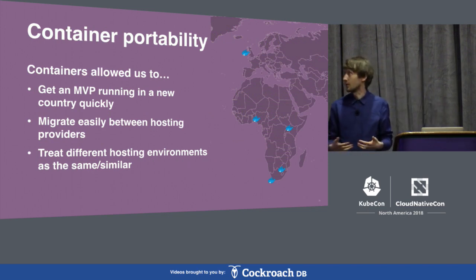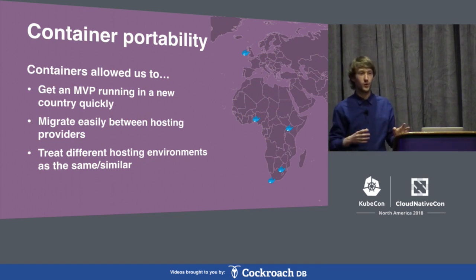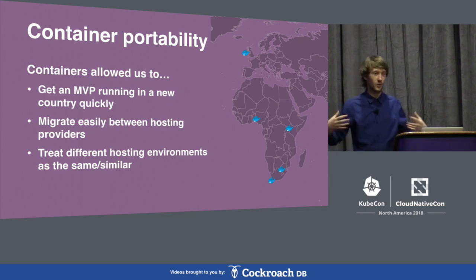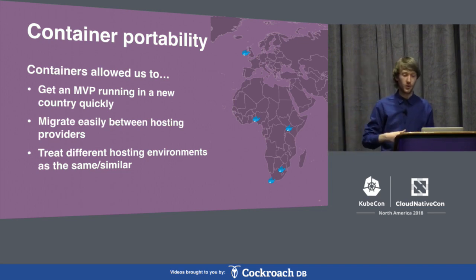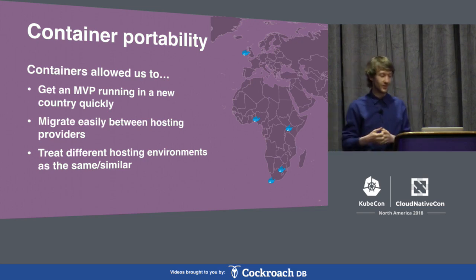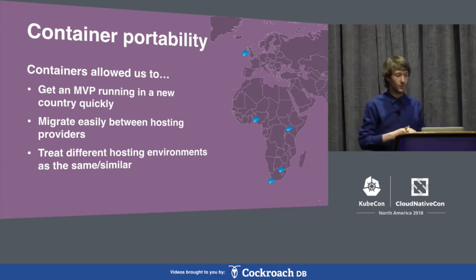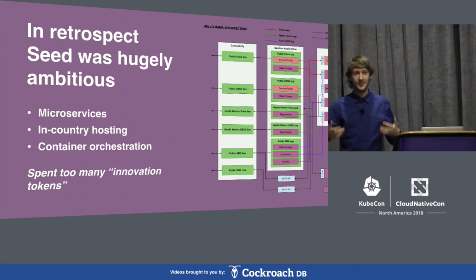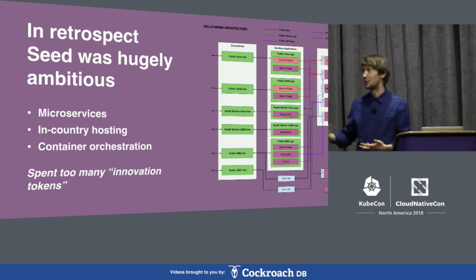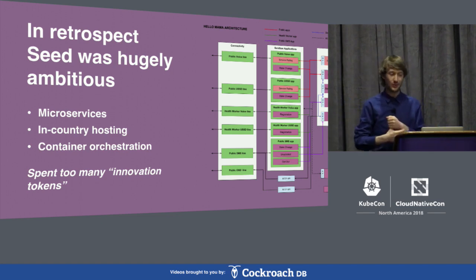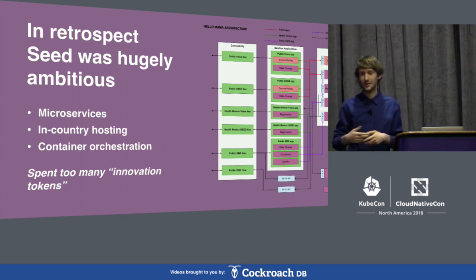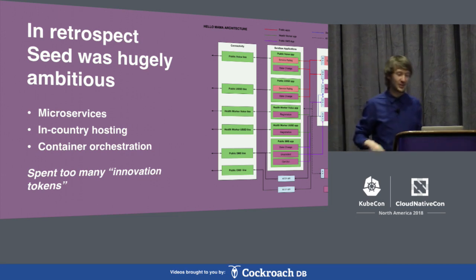This did actually work for us quite well. It allowed us to get minimum viable products set up in different countries very quickly. As soon as our SRE team had deployed the container orchestration software, developers could get started and get things running fast. We could also migrate between different hosting providers, which turned out to be really important. But in retrospect, this was also a really ambitious project — we tried to do too many new things at once. One of our Nigerian services used microservices, and we also had trouble with in-country hosting, while still quite new to container orchestration. We kind of spent too many innovation tokens.